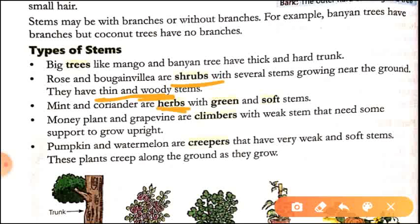Herbs are also small plants of medicinal importance. If we talk about the stems of herbs, they are green and soft. We can take the examples of coriander and mint. Mint is called podina and coriander is called dhaniya.